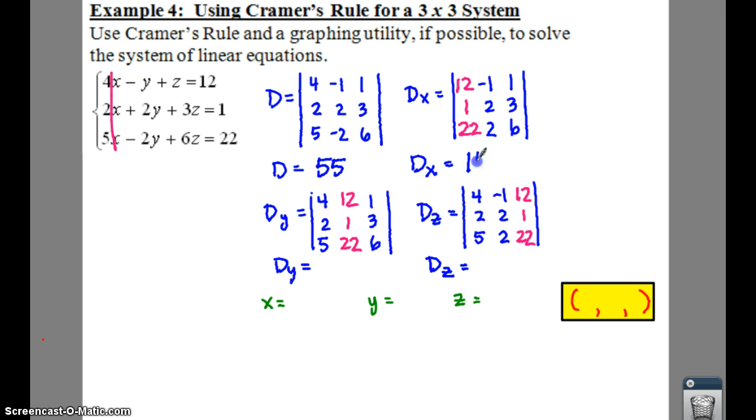D sub x is 110. D sub y is negative 165. And D sub z ends up being 55.